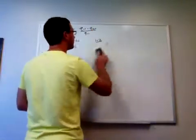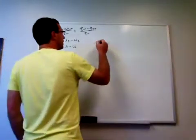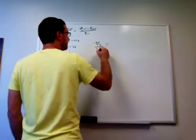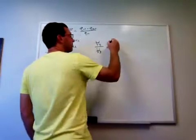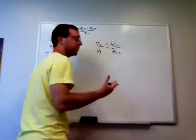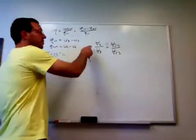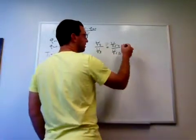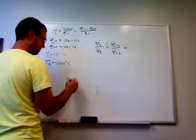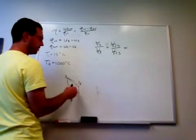We'll do the same thing for process 3 to 4. And so we know that V4 over V3 is Vr4 over Vr3. That's from the isentropic process, ideal gas, variable specific heat equations. And we also know that this is the compression ratio or 1 over the compression ratio. So V4 over V3 is the compression ratio.